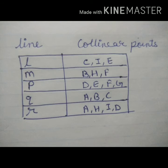B, E, F are collinear points on line M. D, E, F, G are collinear points of line P. D, A, B, C are collinear points on line Q, and A, H, I, D are collinear points on line R.